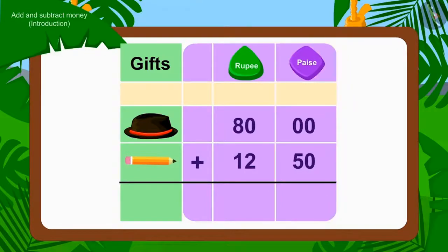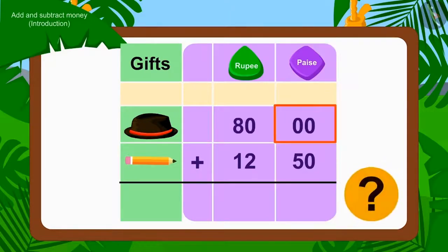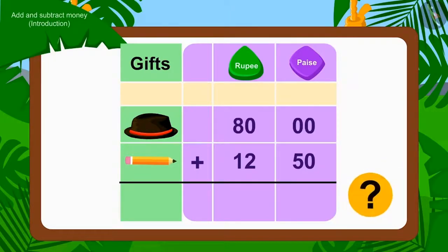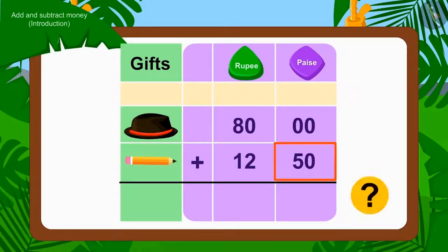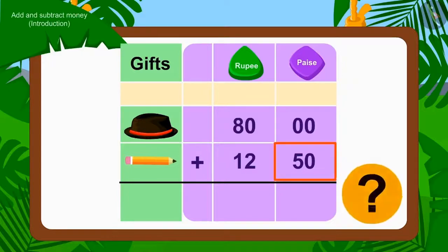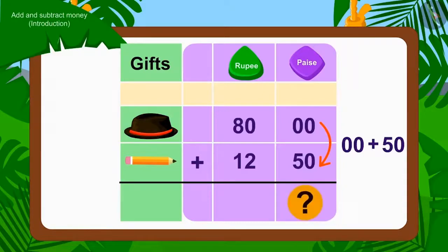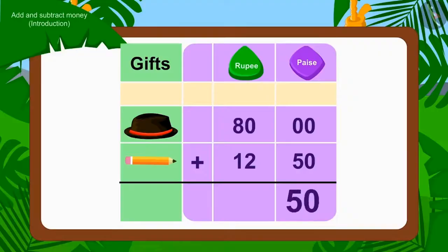First, we will add the numbers of paise. Is there an amount of paise in the cap price? No. Is there any paise in the price of a pencil? Yes — 50 paise. How much paise will there be if you add 50 paise to 0 paise? Exactly — 50 paise.